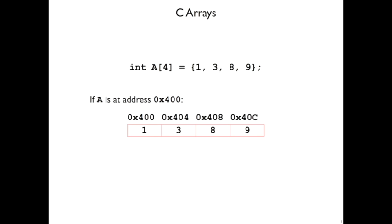To make that a little more concrete, let's suppose that a is allocated at hex 400. That means the first number in the array, 1, is at that address, the second number, 3, is at 0x404, because it takes 4 bytes, and so on.